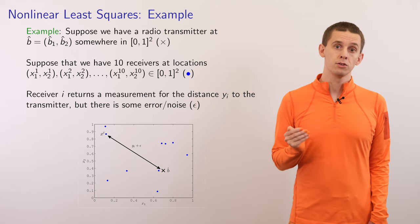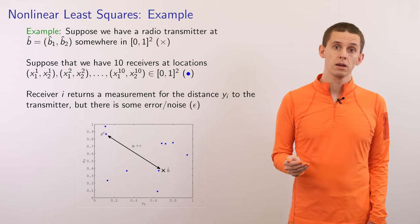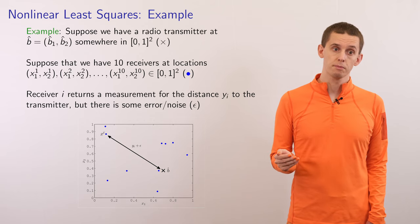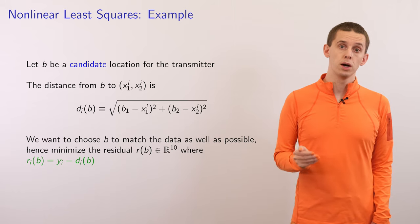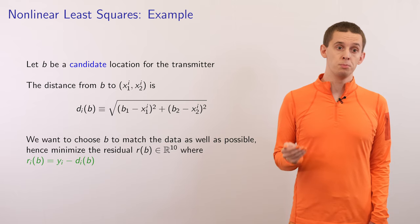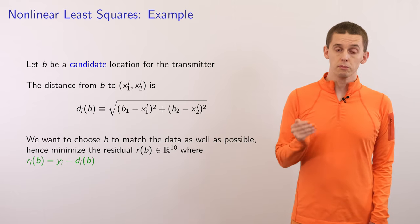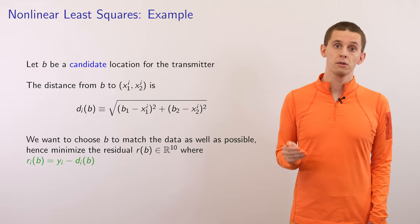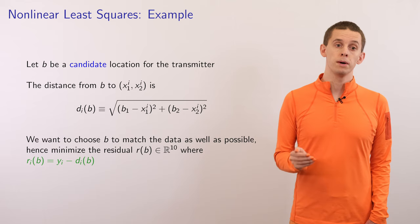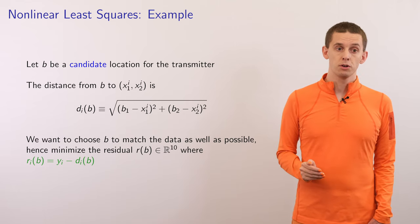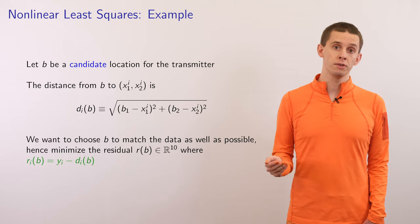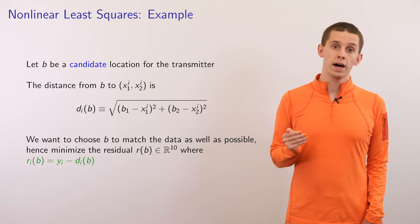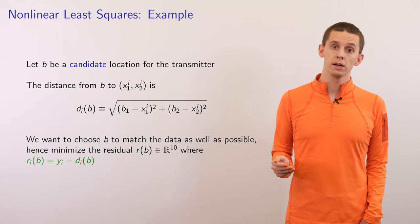The situation is what we have in this diagram here. The cross represents the transmitter and the circles represent the receivers. But this measurement will have some amount of noise. Our goal is to determine the position of the transmitter based on these noisy measurements alone. Let b without a hat be a candidate location for the transmitter. The distance from b to a particular receiver x_i is given by d_i of b, which equals the square root of (b1 minus x1_i) squared plus (b2 minus x2_i) squared. We want to choose b to match the data as well as possible, and hence we want to minimize a residual vector r as a function of b, where the i-th component r_i of b is given by y_i minus d_i of b.